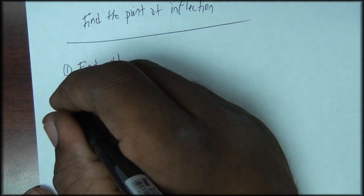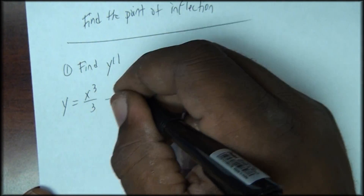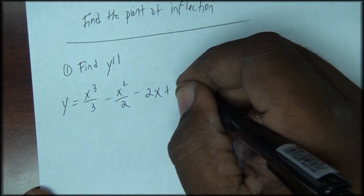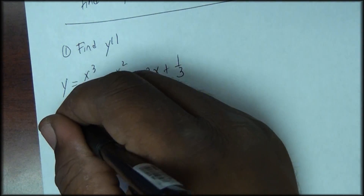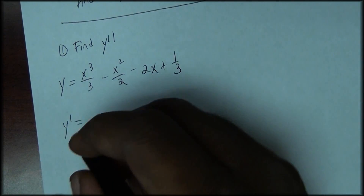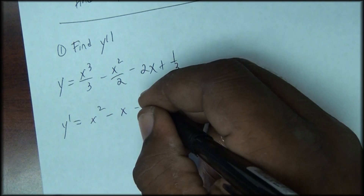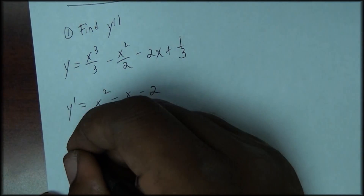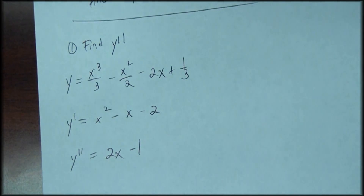Given y equals x cubed over 3 minus x squared over 2 minus 2x plus one-third, the first derivative is x squared minus x minus 2, and the second derivative is 2x minus 1.